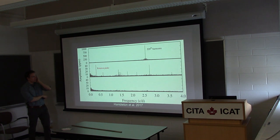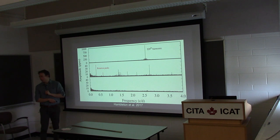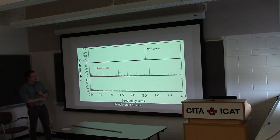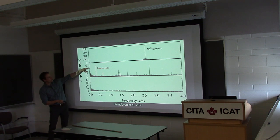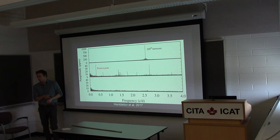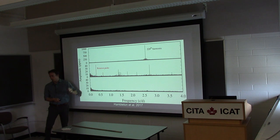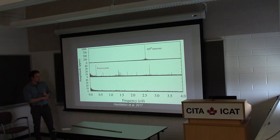If you take a Fourier transform of this system, you basically just see one huge spike at 229 times the orbital frequency. If you pre-whiten that out, then you see a bunch of other structure, all about 30 times smaller amplitude. The main structure is peaks at integer multiples of the orbital frequency — other tidally excited gravity modes. We also see what look like rotational signatures, so we think we can measure the rotation rate.